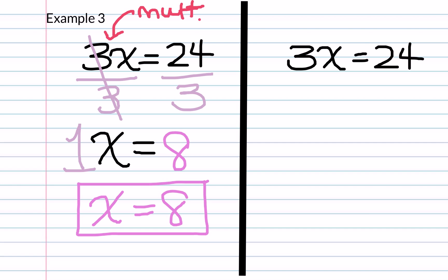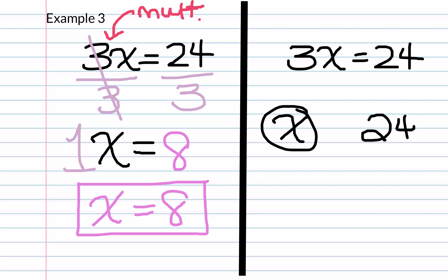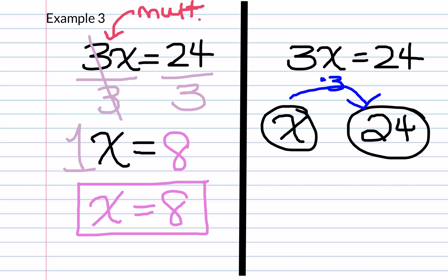For the mapping, we always start with our variable, then our solution. We ask, what is happening to x in order to get to 24? In this case, we are multiplying by 3. So when working in reverse, the inverse operation is to divide by 3. If we do 24 divided by 3, we get that x is equal to 8.